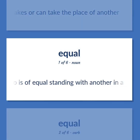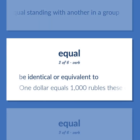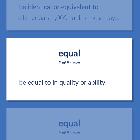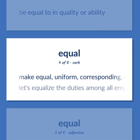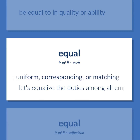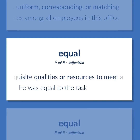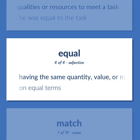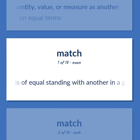Equal and peer: A person who is of equal standing with another in a group. Be identical or equivalent to. $1 equals 1,000 rubles these days. Be equal to in quality or ability. Make equal, uniform, corresponding, or matching. Let's equalize the duties among all employees in this office. Having the requisite qualities or resources to meet a task. He was equal to the task. Having the same quantity, value, or measure as another. On equal terms. A person who is of equal standing with another in a group.